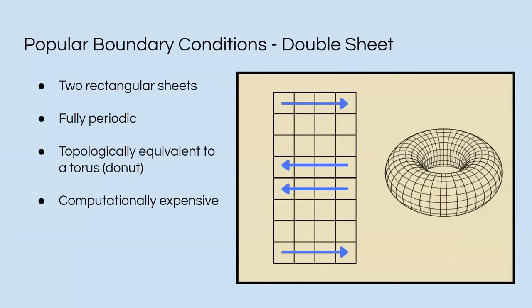The next run is the double sheet run. So now, to ensure periodicity, we have two rectangular sheets. It's fully periodic, and you can think of it as topologically mapping to a torus, or a donut, where you connect the top and the bottom, and then you wrap the sides around. However, this requires two sheets, and when each sheet has so many particles, it can be really computationally expensive.